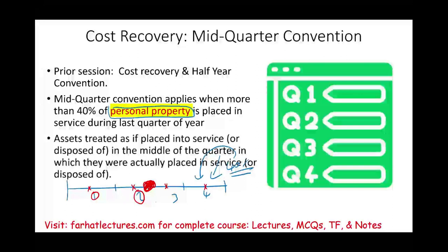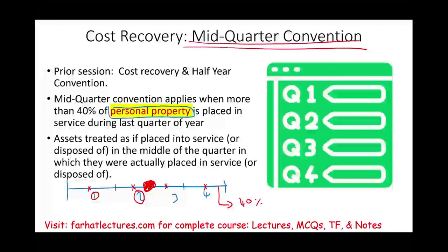So rather than assuming you purchased your asset halfway throughout the year, if you happen to place 40% of your personal property in the fourth quarter, you go back and use the mid-quarter convention. Assets are assumed bought or sold in the mid-quarter.